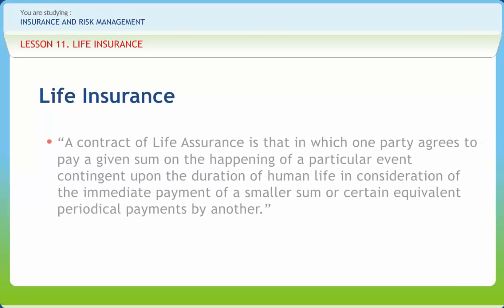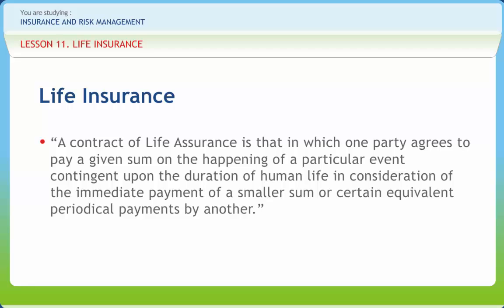A contract of life insurance is that in which one party agrees to pay a given sum on the happening of a particular event contingent upon the duration of human life, in consideration of the immediate payment of a smaller sum or certain equivalent periodical payments by another. Life insurance business is the business of effecting contract upon human life.